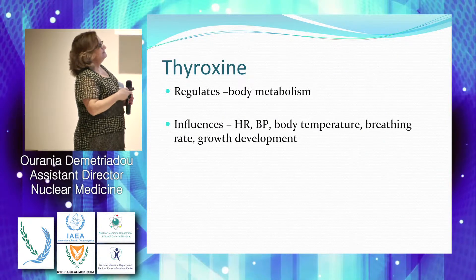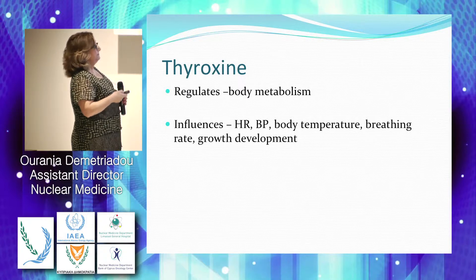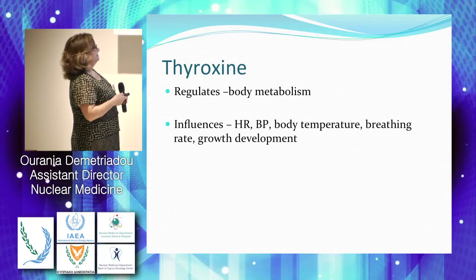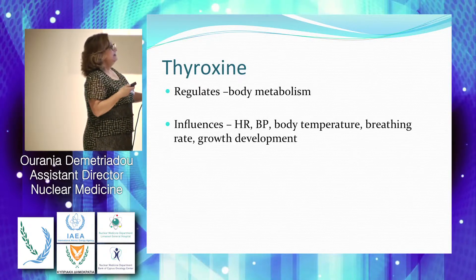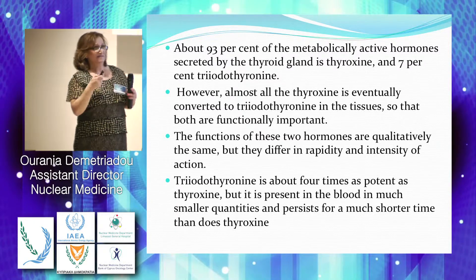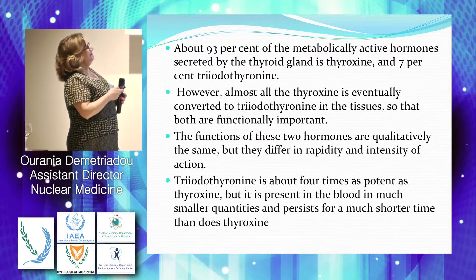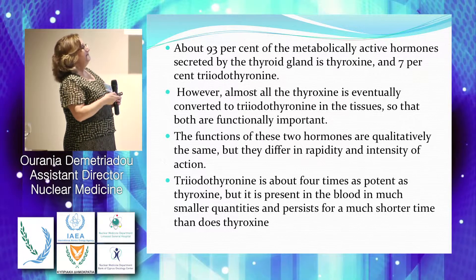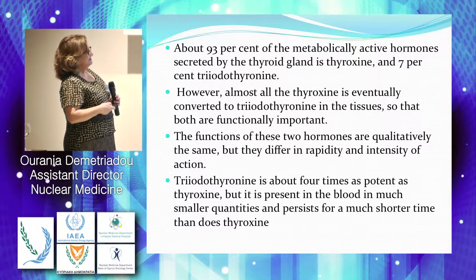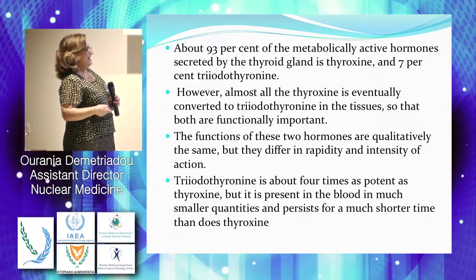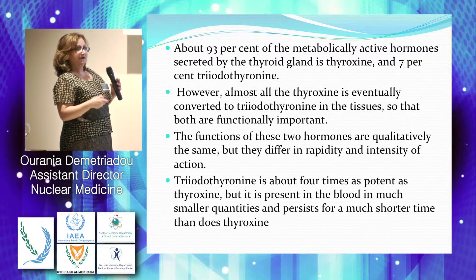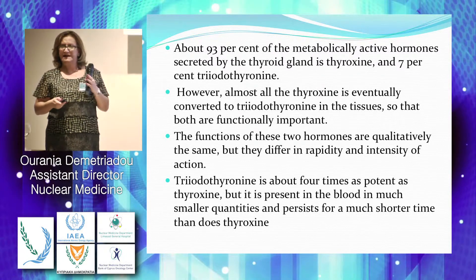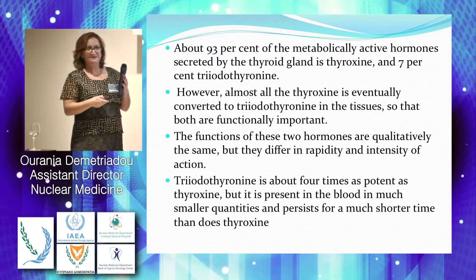Thyroxine regulates body metabolism and affects heart rate, blood pressure, temperature, breathing rate, and growth and development. Of the two hormones, thyroxine and triiodothyronine, 93% of production is mainly thyroxine. Triiodothyronine is only 7%; however, triiodothyronine is four times as potent as thyroxine but is present in the blood in much smaller quantities and has a shorter half-life. Triiodothyronine has approximately 8 hours half-life while thyroxine has approximately 14 days.